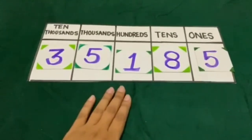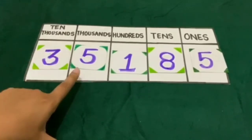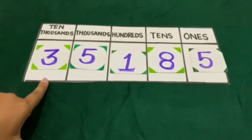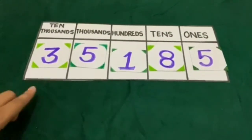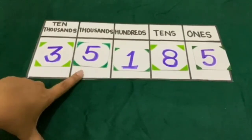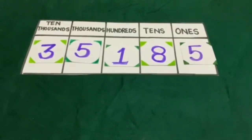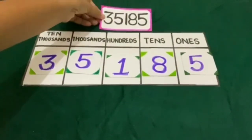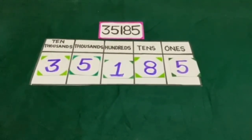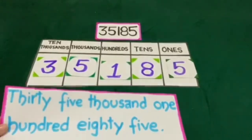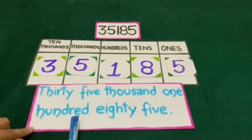Here is a number placed in a place value chart. Now let's see how we will pronounce it. The thousands and ten thousands place digits we will say collectively, and the tens and ones place digits we will say collectively. So it will be pronounced as 35,185. In numeric form it will be written as 35,185.